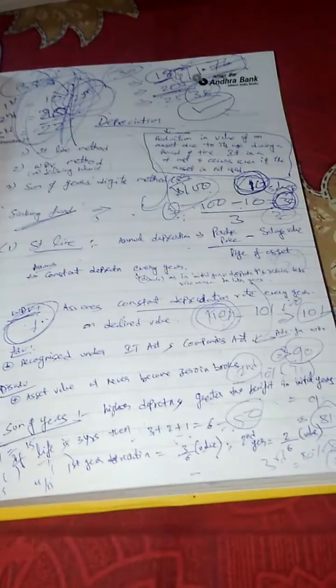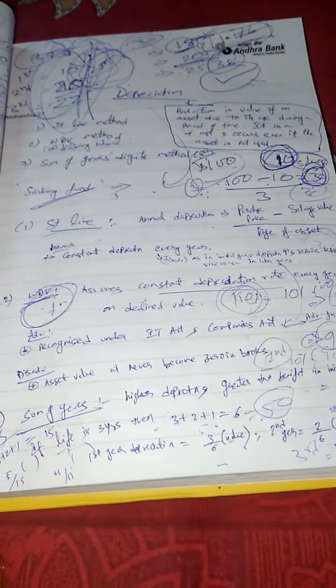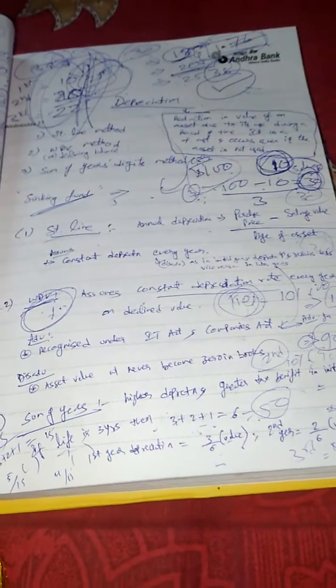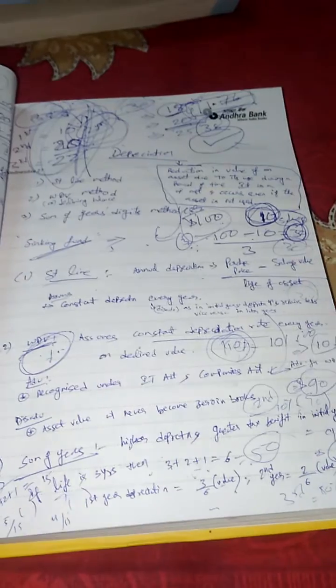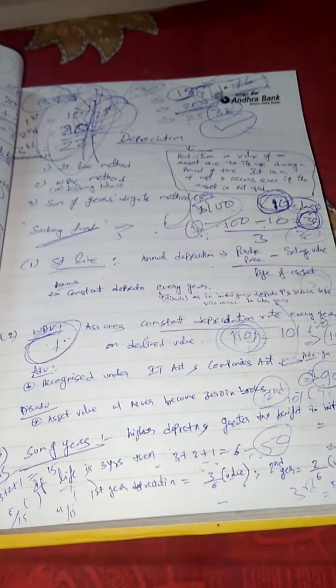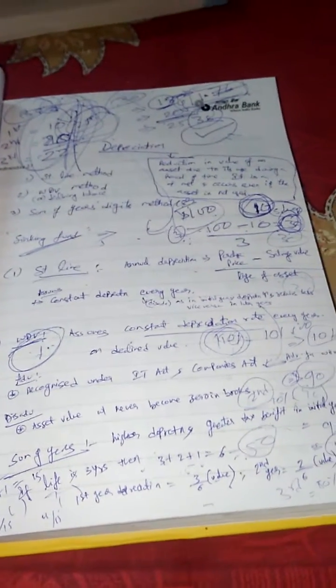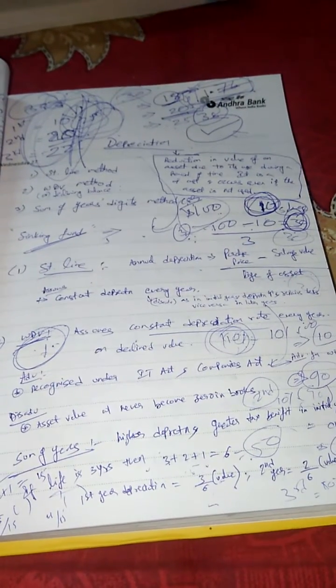In exam, what you will get is they will give the method — either straight line method, return on value method, or sum of years digit method — and they will give the value of an asset, useful life, and all the required data. They will ask for depreciation. For example, they will give useful life of an asset as 3 years and ask: what is the amount of depreciation to be charged in the second year? That way the question will be, asking the amount of depreciation to be charged in a particular year.